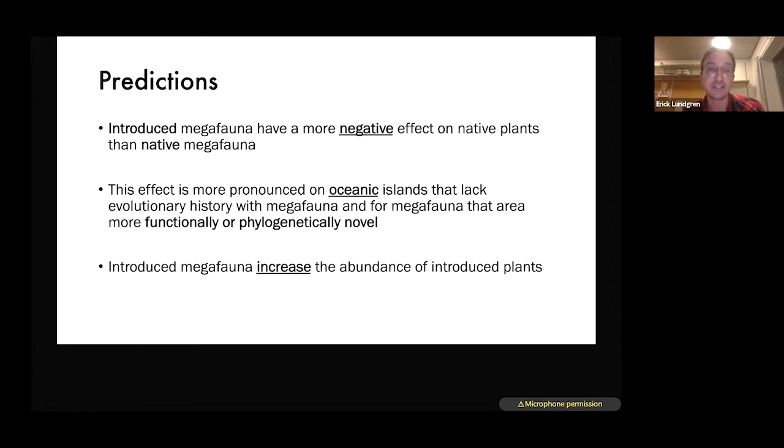For this project, we predicted that introduced megafauna would have a more negative effect on native plants than native megafauna because native plants had co-evolved with native megafauna, but not with introduced megafauna. We expected that effect to be most pronounced on oceanic islands, places that lack evolutionary history with megafauna. We also predicted that megafauna that are very different in these places they've been introduced are going to have the most negative effects on native plant diversity. We also expected the introduced megafauna would increase the abundance of introduced plants, particularly plants that they had co-evolved with. These are predictions that are all common in the literature, the claims that people make to justify how we respond to animals like wild donkeys.